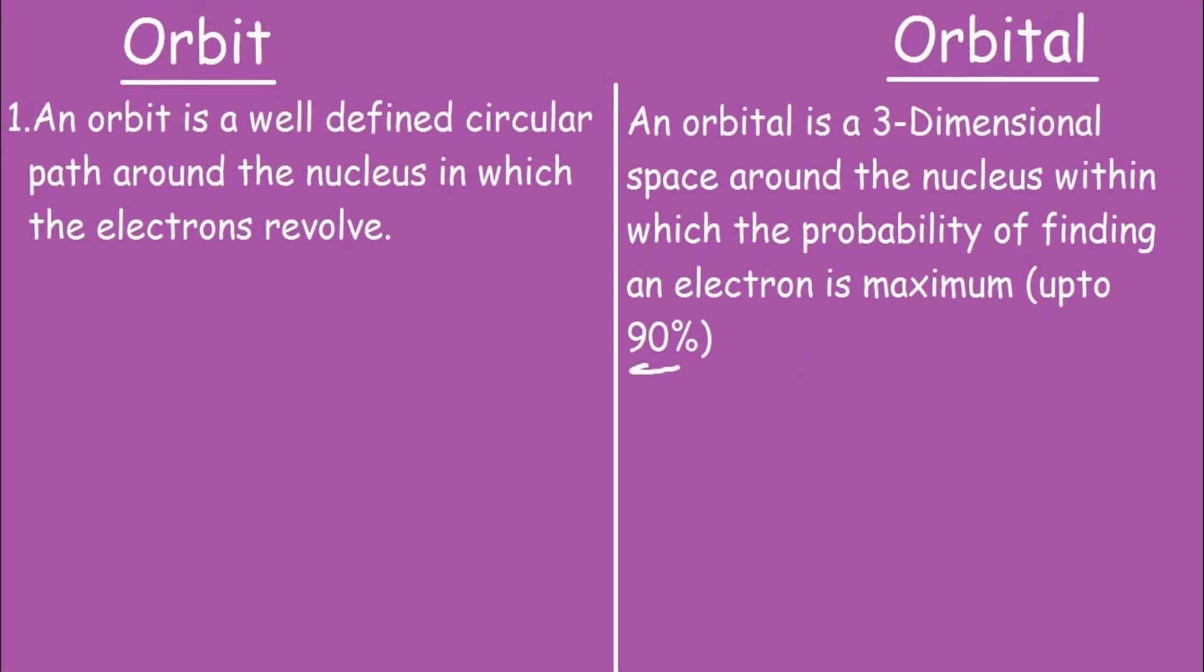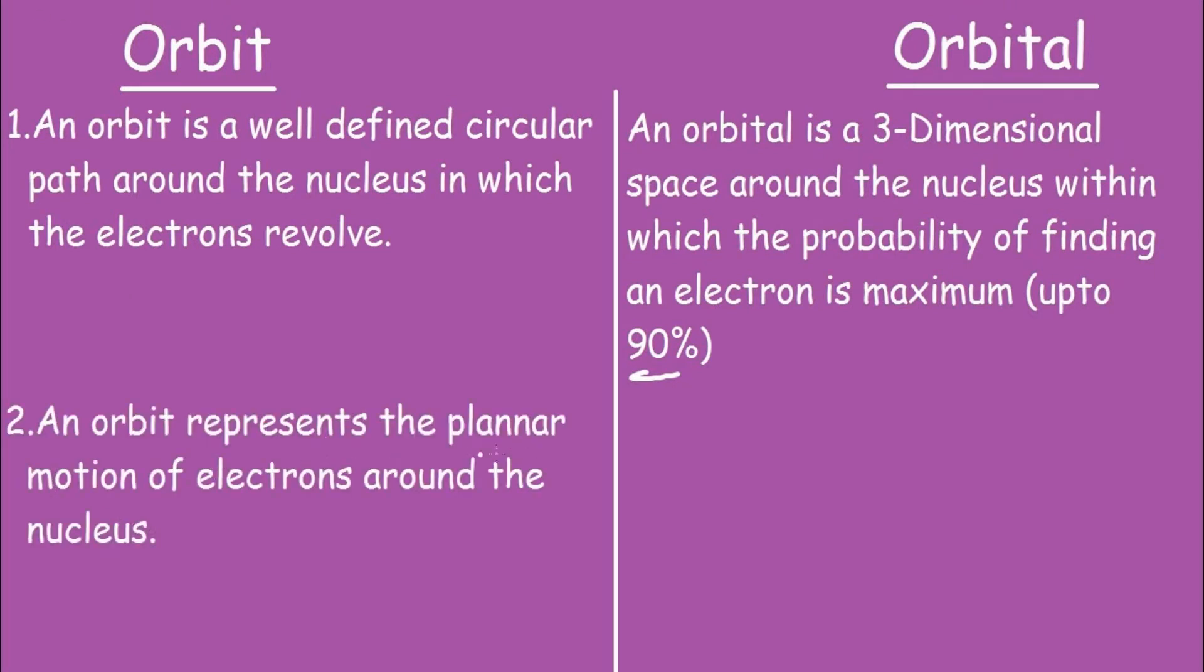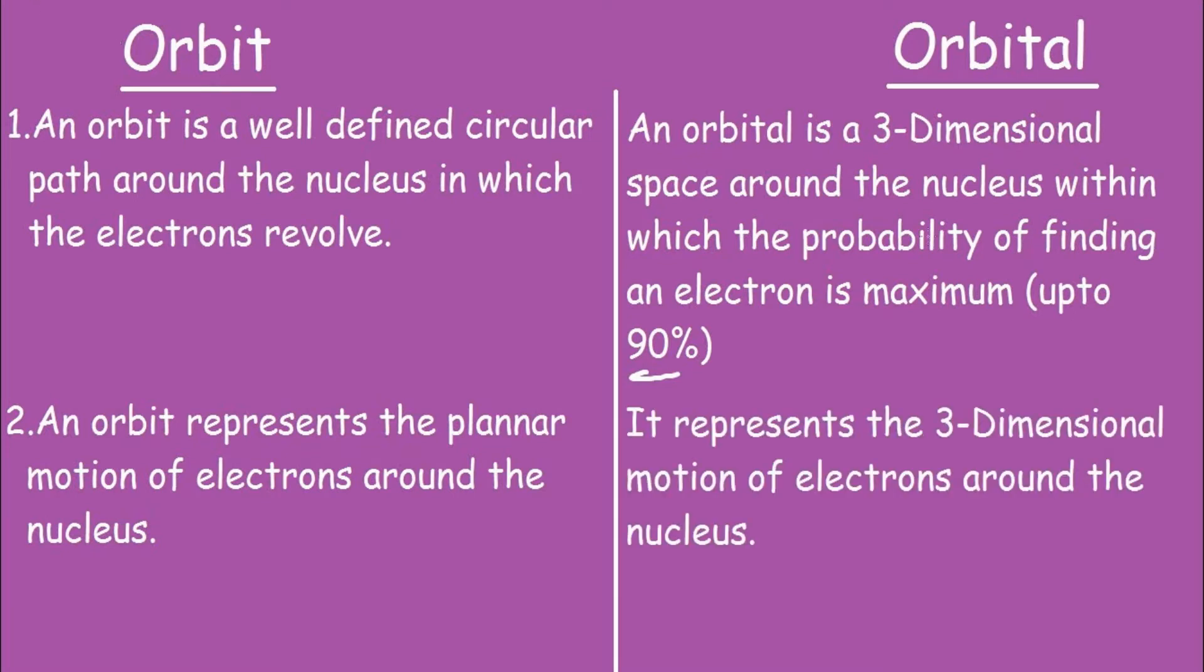So let's move on to the second point. An orbit represents the planar motion of electrons around the nucleus. For an orbital, it represents the three-dimensional motion of electrons around the nucleus.